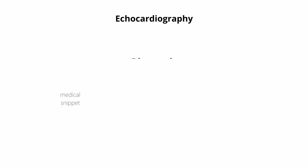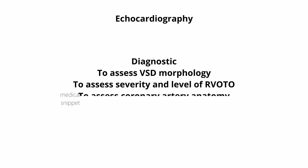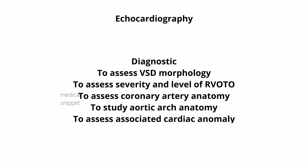Echocardiography is diagnostic. We can assess and measure the severity of all four features of TOF on echo. VSD morphology and number of VSDs can be assessed. The anatomy and severity of the level of RVOT obstruction can be measured. Coronary artery and aortic arch anatomy can be studied, and the presence of any other associated cardiac anomalies can also be found.